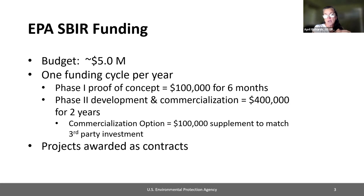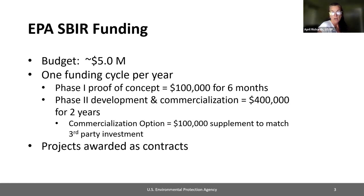Same phased approach: phase one is proof of concept, and we provide $100,000 for six months to prove out the idea and see if it has traction. Then those successful phase ones compete for phase two, which takes the technology towards commercialization — as far as you can get with $400,000 for two years. We do have one supplement. We put a heavy focus on commercialization from the very beginning — we don't just want good ideas, we want good ideas with commercial potential. We also have a $100,000 supplement for phase twos if you can get some third-party investment, and we award everything as contracts.